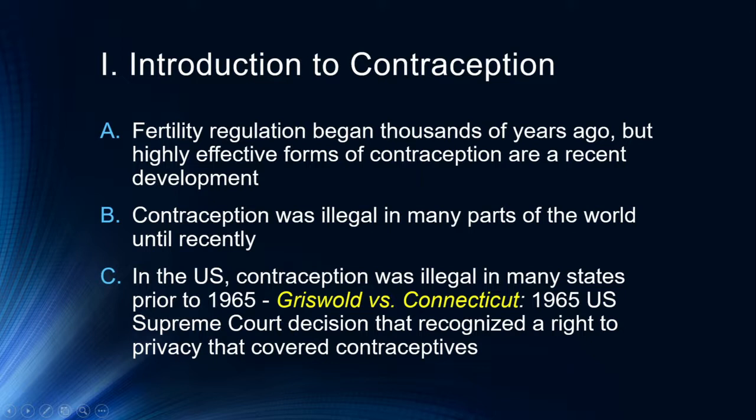Contraception is certainly looked down upon by a number of religious institutions. Catholics, for example, are not to be using contraception — I believe the rhythm method is the one approved for use by that particular religious group. In the United States, contraception was illegal in a number of states prior to 1965.